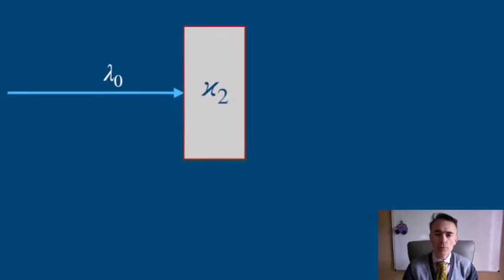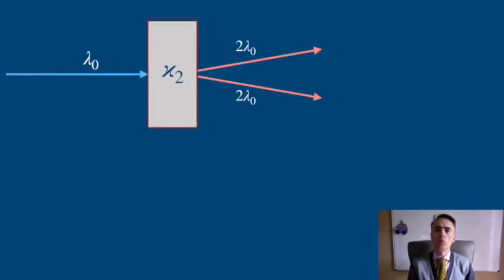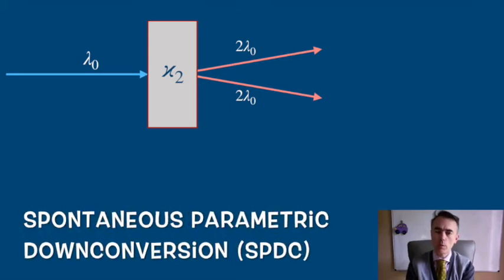If we send a high-energy beam of light to a nonlinear crystal, we can convert a high-frequency photon into two low-frequency photons. This is a nonlinear phenomenon called spontaneous parametric down-conversion.